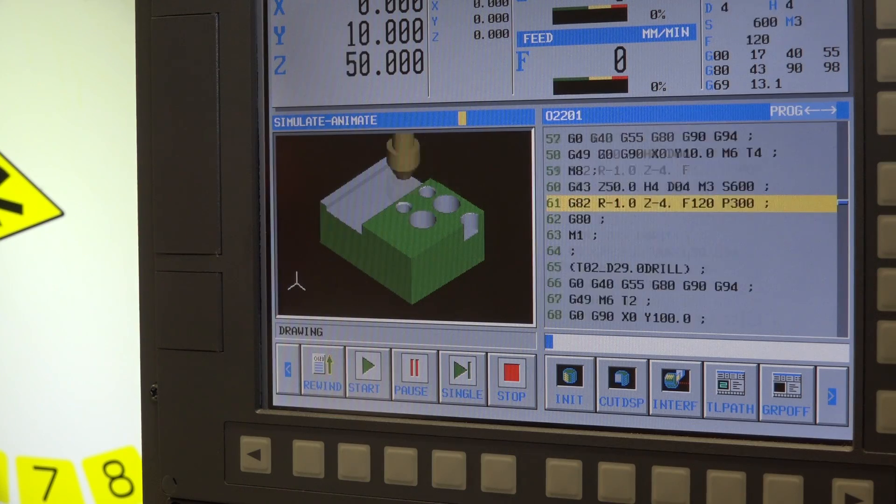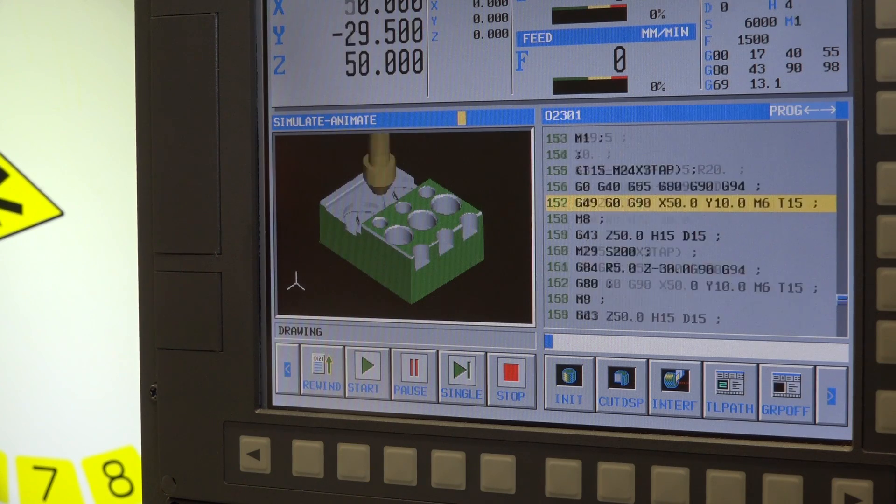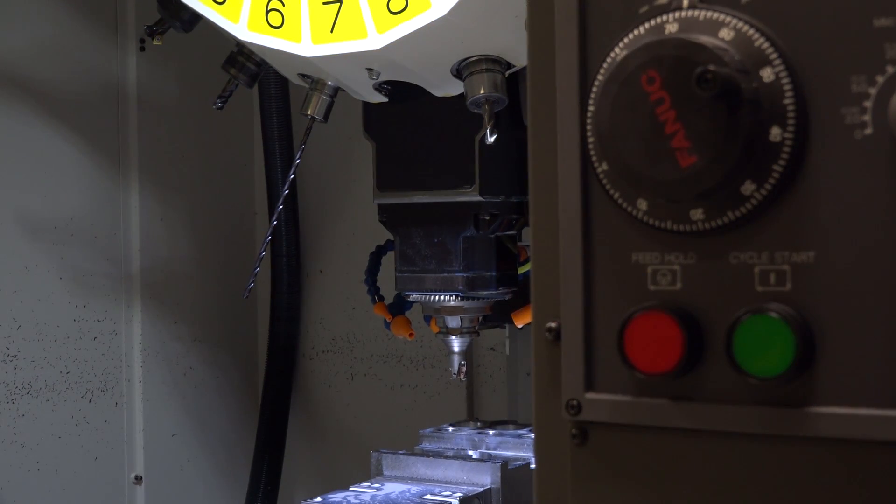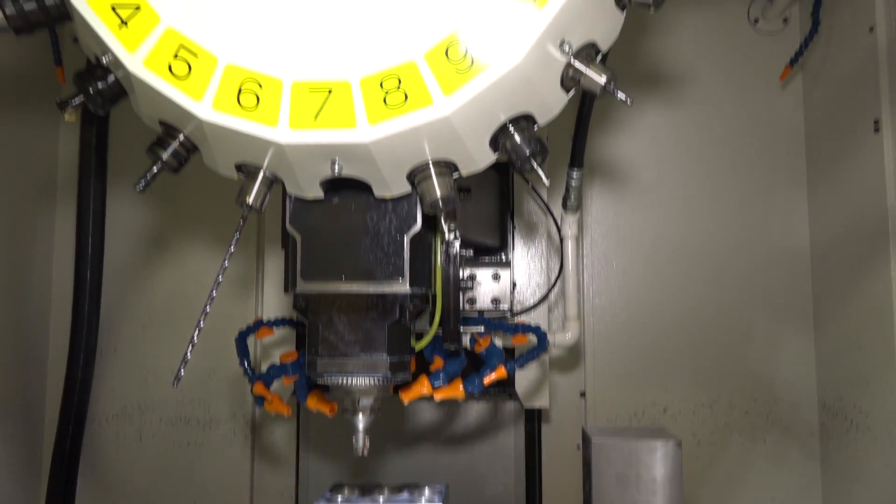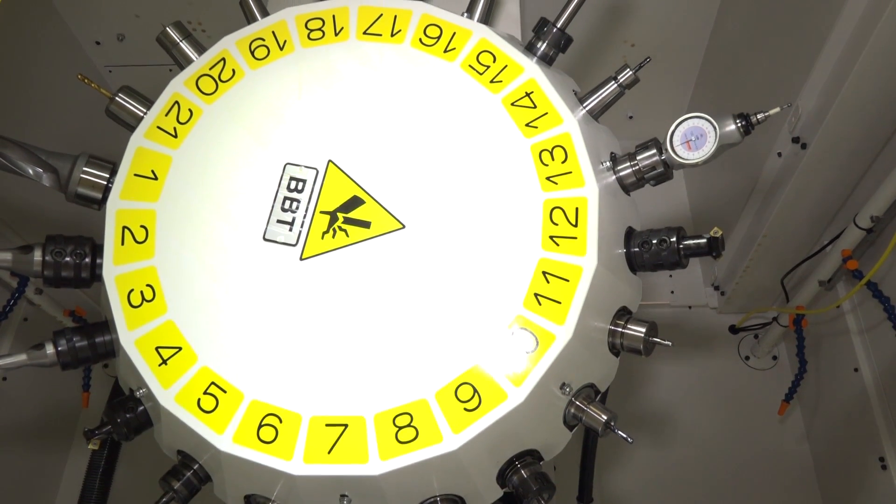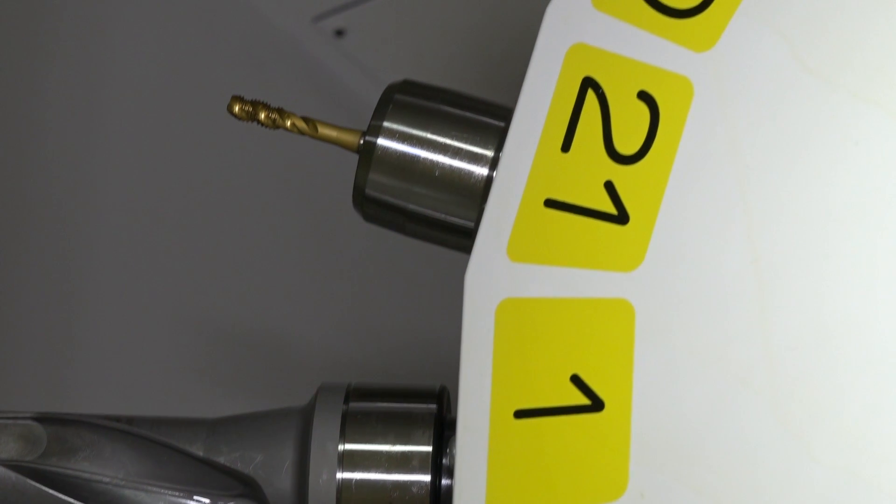Talking about speed, you're looking at a cut-to-cut time of 1.6 seconds depending on the tool weight, but 1.6 seconds cut to cut. The tool changer on this machine has 21 pockets, and I've mentioned already about it being a 10,000 rpm BT30. You can go from 0 to 10,000 rpm in less than half a second.